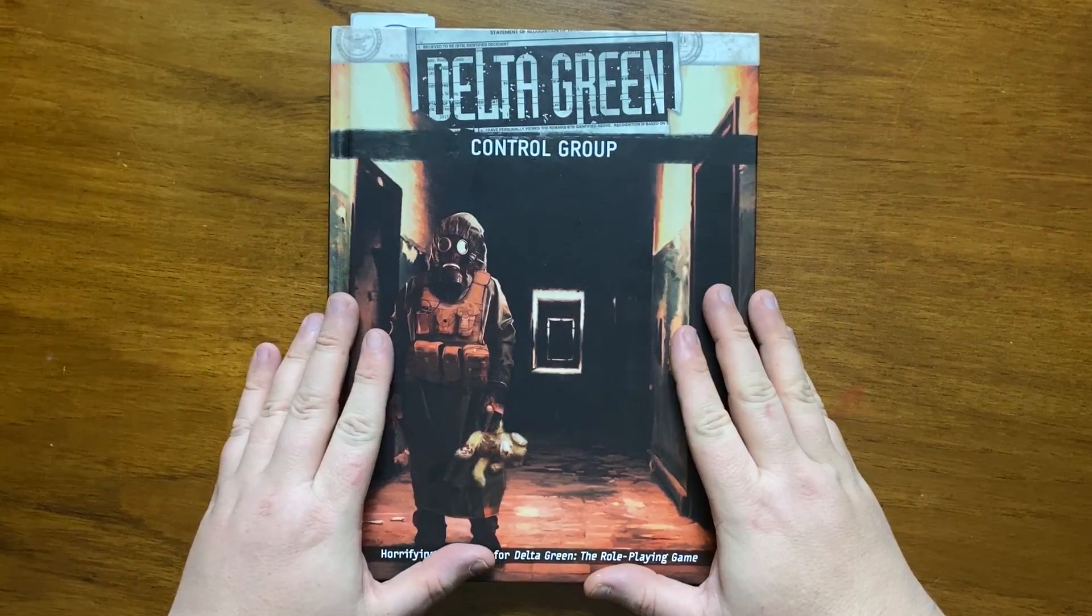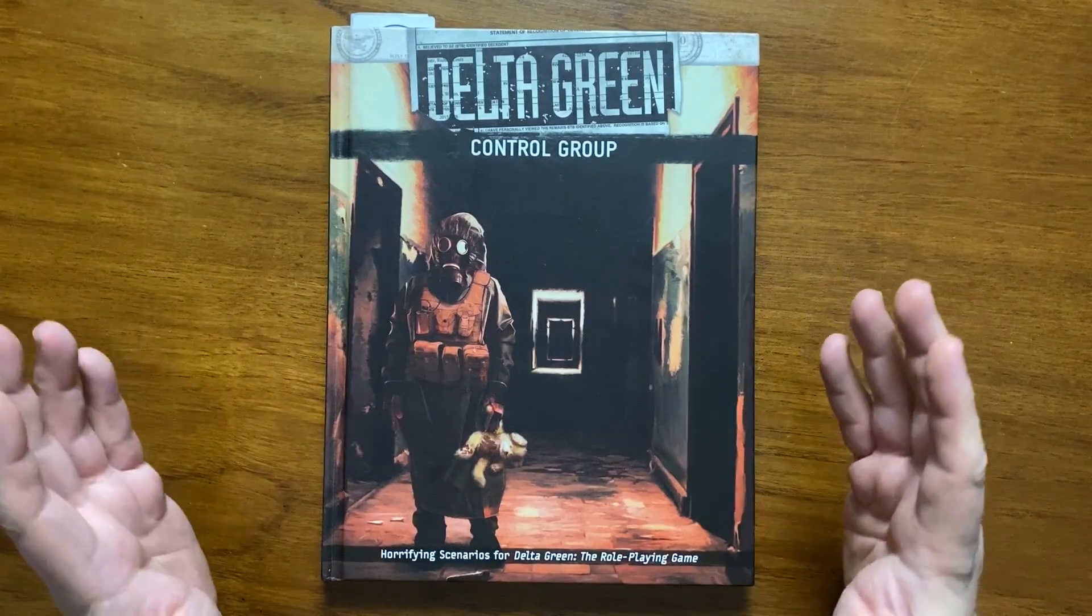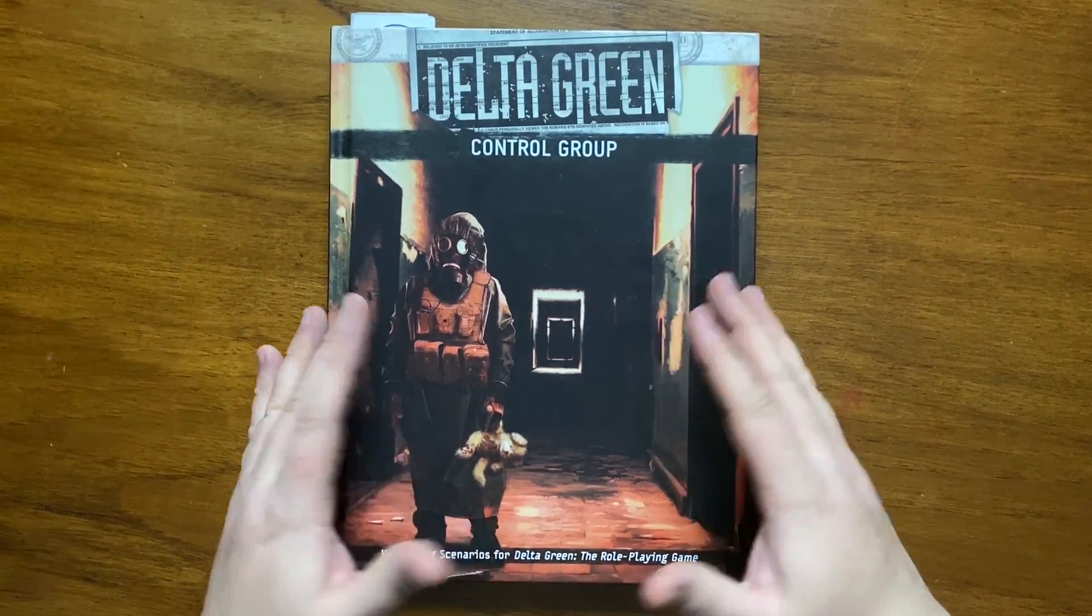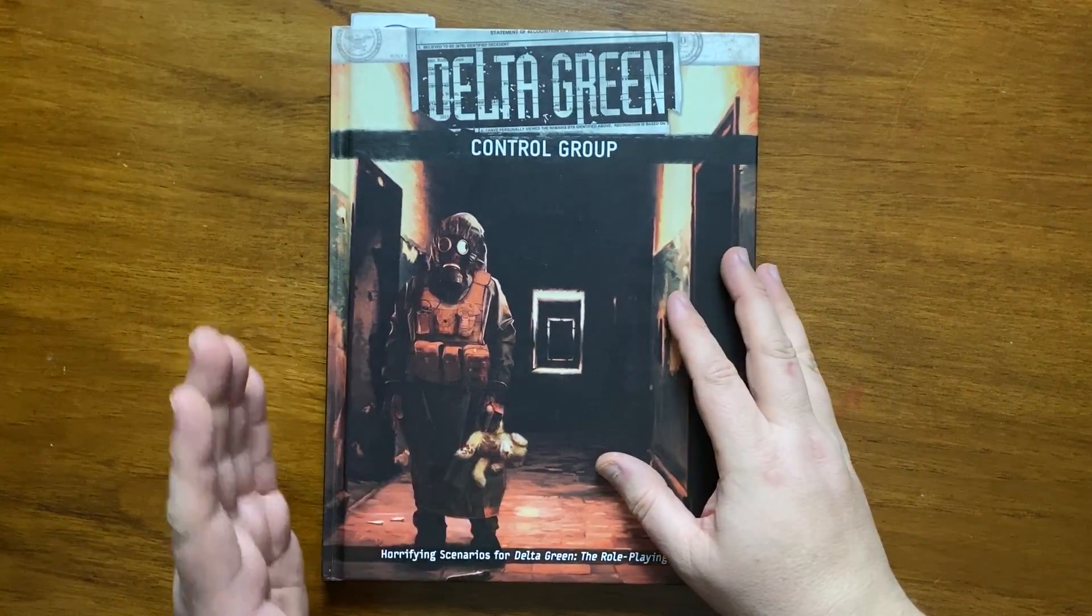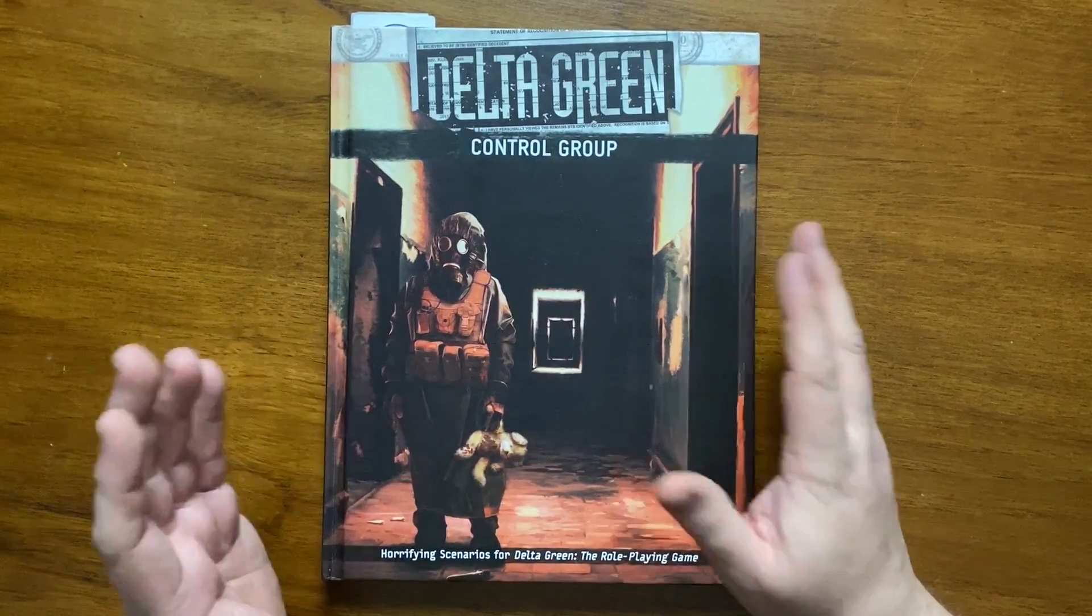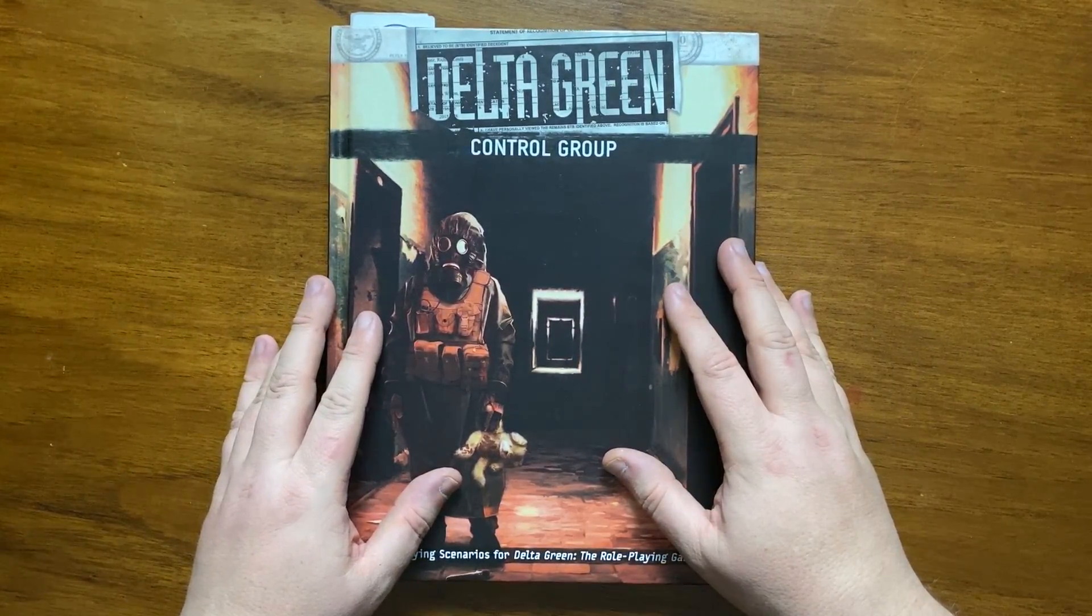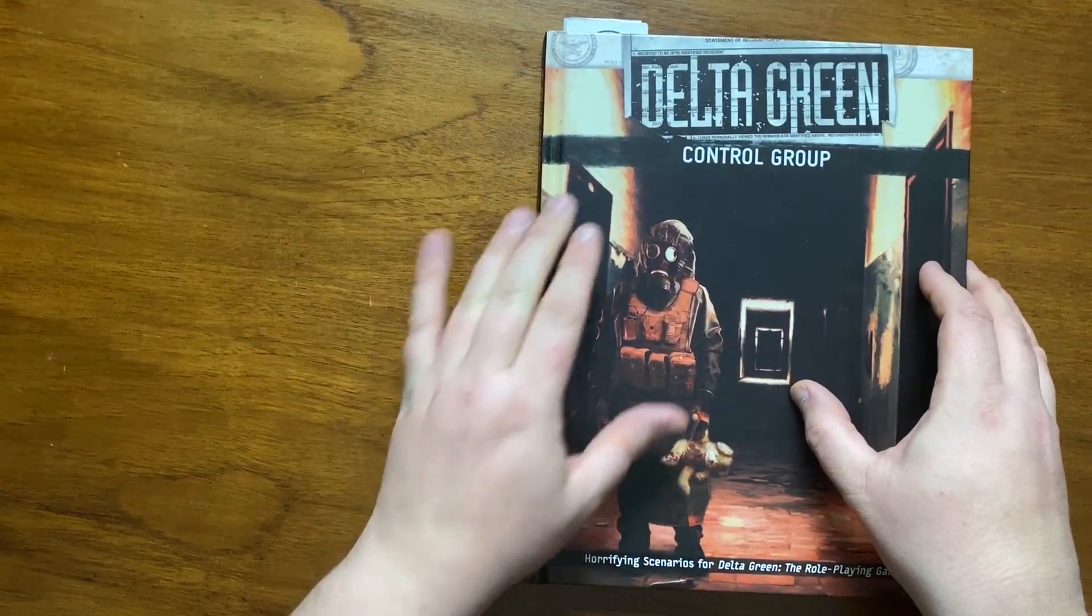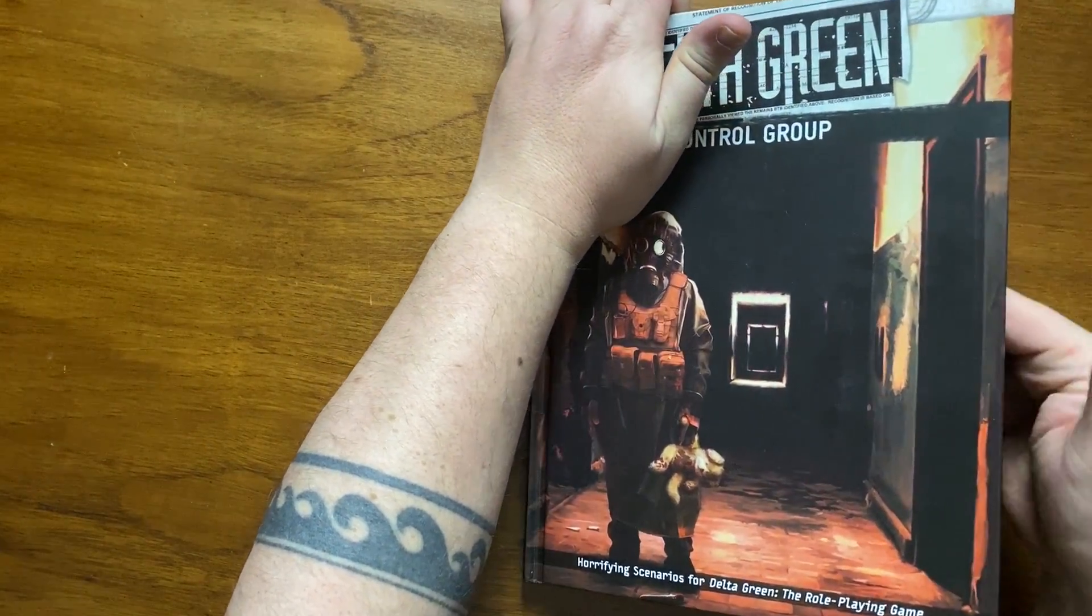Hello and welcome to Bud's RPG Review where I give my thoughts on role-playing games, card games and board games. Today's review is Delta Green Control Group for Delta Green the Role-Playing Game by Arc Dream Publishing. In this video I'll be reviewing the second scenario of the four contained within, Night Visions. There'll be spoilers from this point on so stop watching now if you intend to play this.